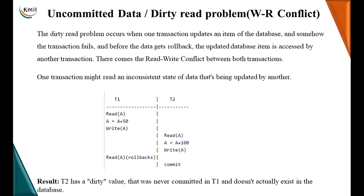Look at the uncommitted data problem. This is also called as dirty read problem wherein a dirty read is when one transaction updates an item in the database but due to some reasons the transaction fails. And the data gets rolled back at a later stage but after this updation and before the rollback the database is accessed and that particular item is accessed by another transaction. So, there is a read-write conflict and inconsistent data. Now, let us see how this happens.